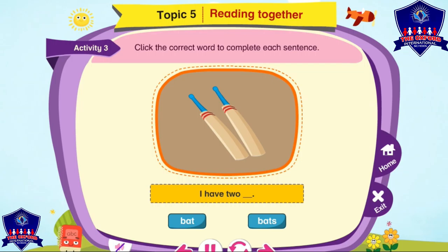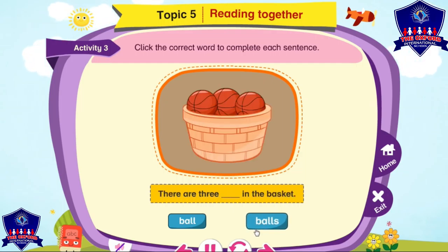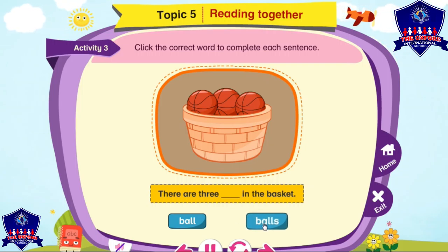Activity 3. Click the correct word to complete each sentence. I have two. Two means plural. One, two — one, two, three. Three is plural. This answer is balls. There are three balls in the basket.